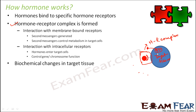Once the hormone-receptor complex has formed inside the target cell, it will directly impact the chromosome function. Inside the cell you have the nucleus, the chromosomes, and the genes. So it will directly affect the chromosome or the gene, and that is how it will bring about biochemical changes in the target tissue. So there are two ways: one way is the hormone remains outside combined with the membrane-bound receptors and second messengers are generated to control metabolism; the other way is the hormone enters inside, combines with the receptors, and controls the chromosome function to bring about a change.